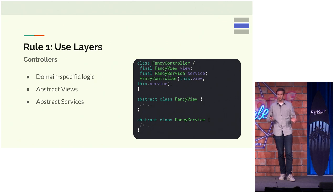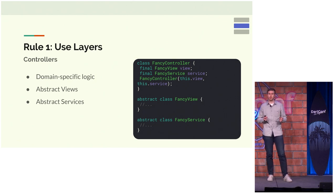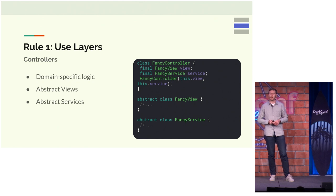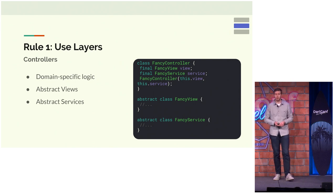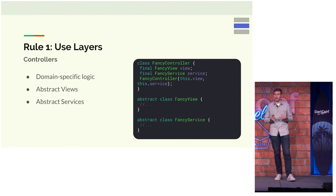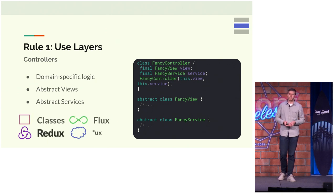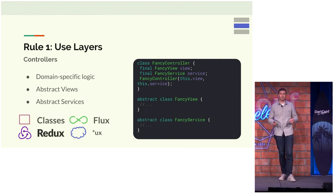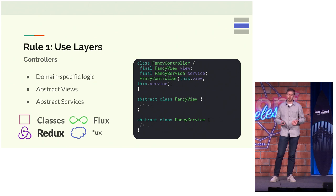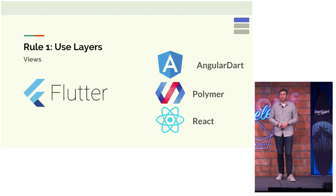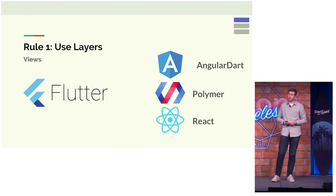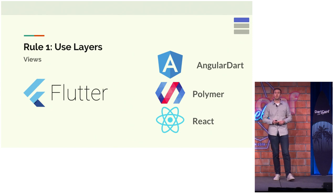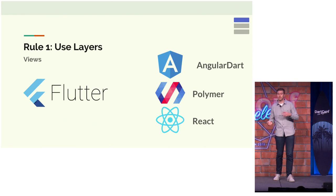Our middle layer is where we manage our state. It contains all of our domain-specific logic and interacts with the other layers in an abstract way — it doesn't concern itself with the implementation. Here we have a controller that asks for a view and asks for a service. It's important to note you can use whatever architecture you want; the important thing is that it's separate from the other layers. At the top layer, we use Flutter, and we use Polymer on our web team. You can use any view implementation you want, making it easier to switch between React and Angular, for example.